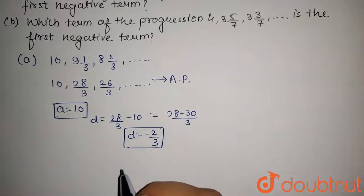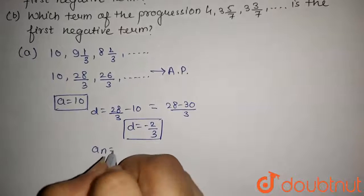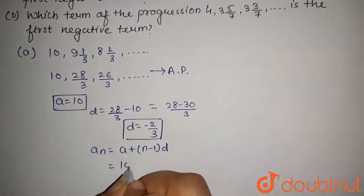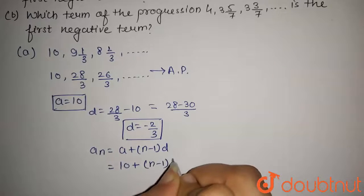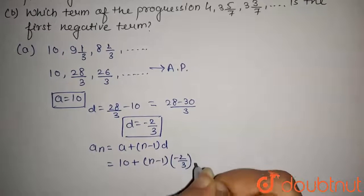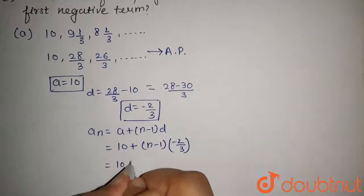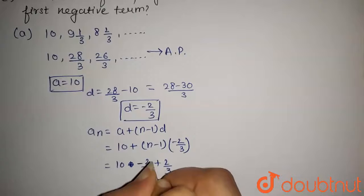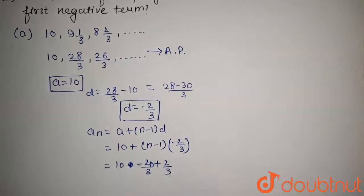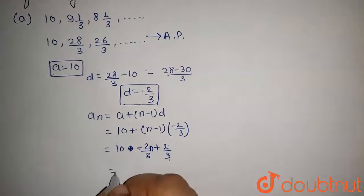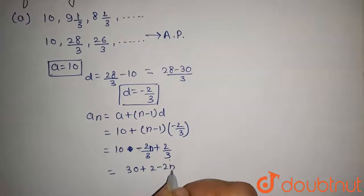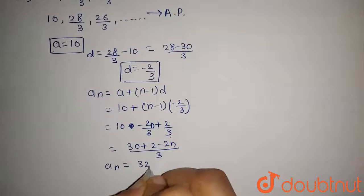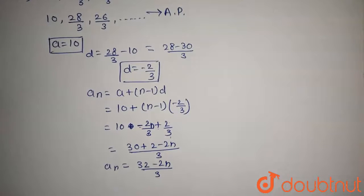Now we can find the general term. The general term will be aₙ = a + (n−1)d, which will be 10 + (n−1) × (−2/3). On expanding, this gives 10 − 2n/3 + 2/3, and on solving we get (30 + 2 − 2n)/3, so the general term is (32 − 2n)/3.